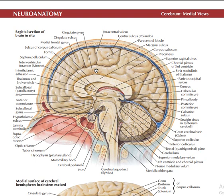You have the middle frontal gyrus here, and the sulcus of the corpus callosum. The cingulate sulcus is above and the cingulate gyrus is below. This is the corpus callosum, and the sulcus above is the sulcus of the corpus callosum. At this point you have the septum pellucidum, which is one of the points used to separate the two hemispheres. Here you have the interventricular foramen, which connects both lateral foramina to the third ventricle, also called the foramen of Monroe.